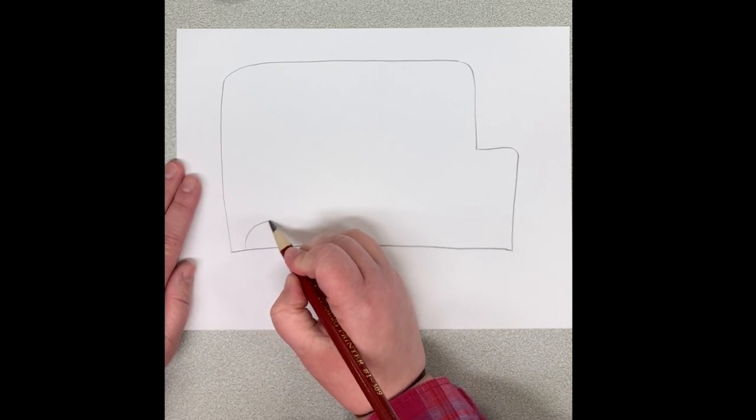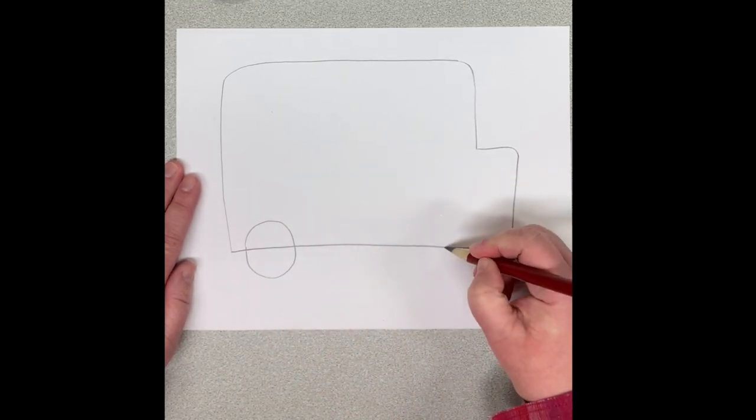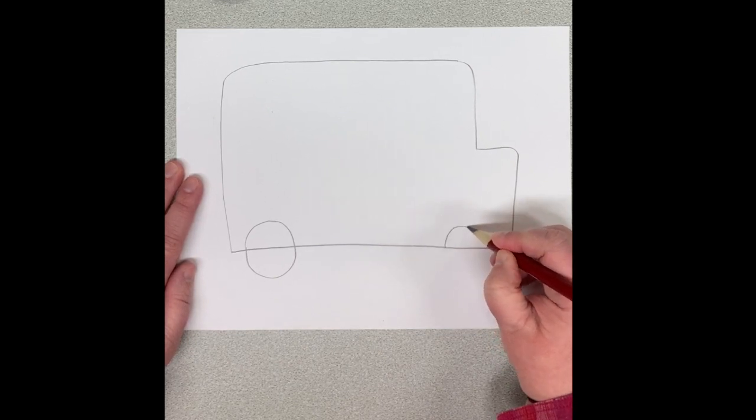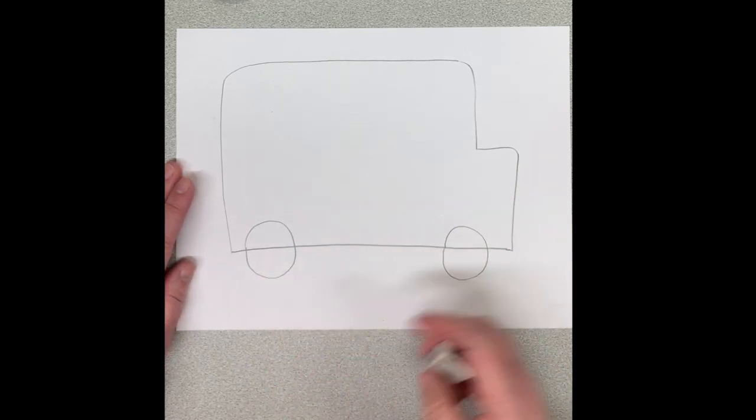My next step is I'm going to add the wheels, so this is where I'm going to need to use my eraser a little bit. I'm going to do one wheel over here and one wheel over here, and then I need to erase these lines in the middle.